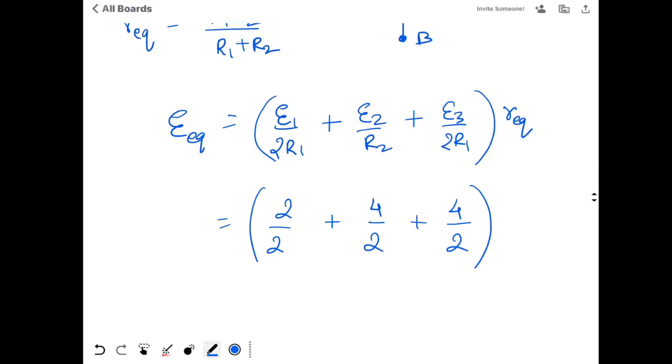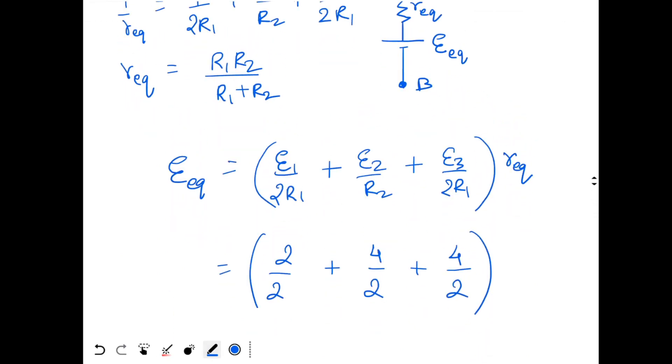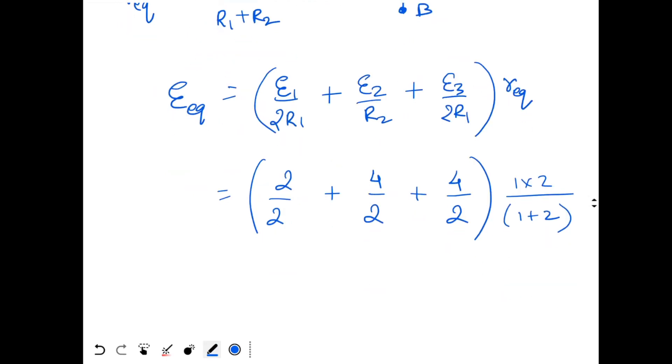And R_equivalent will be what? R1 times R2 by R1 plus R2. So 1 into 2 by 1 plus 2. That's it. This gives me EMF equivalent 10 by 3 volts.